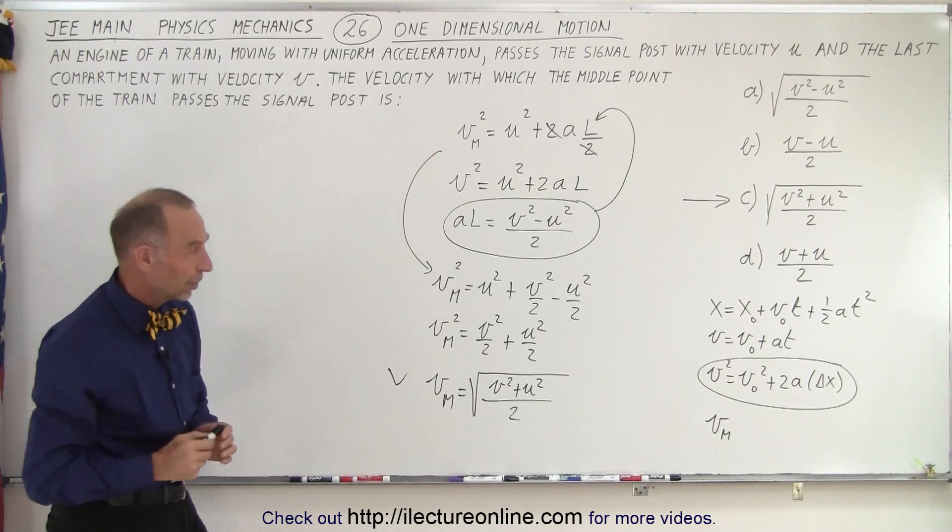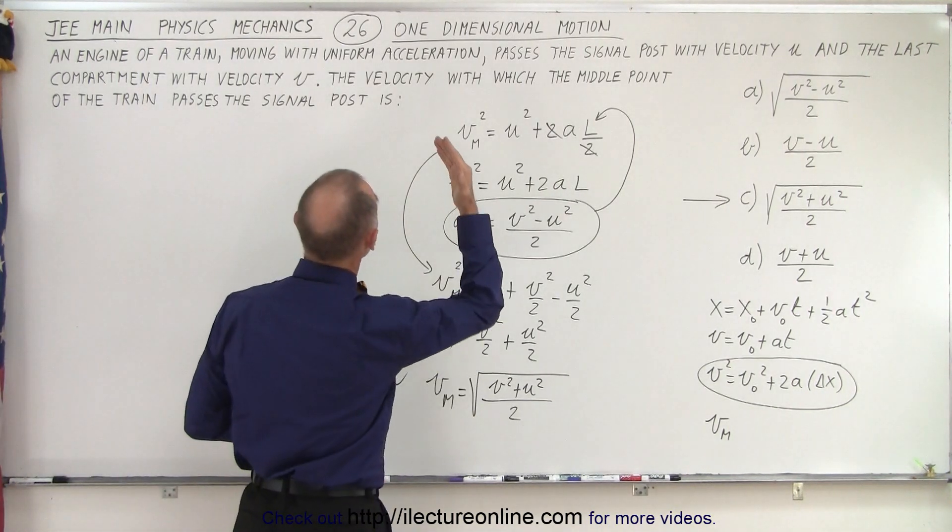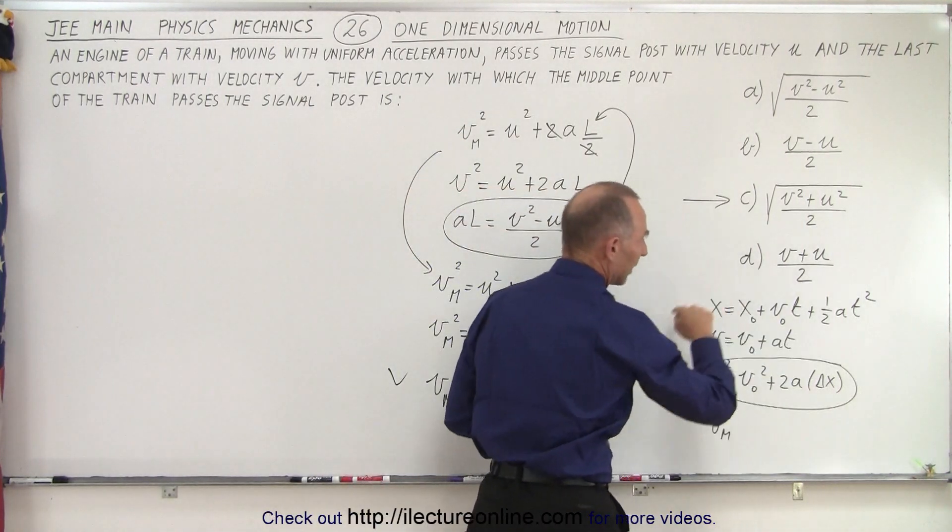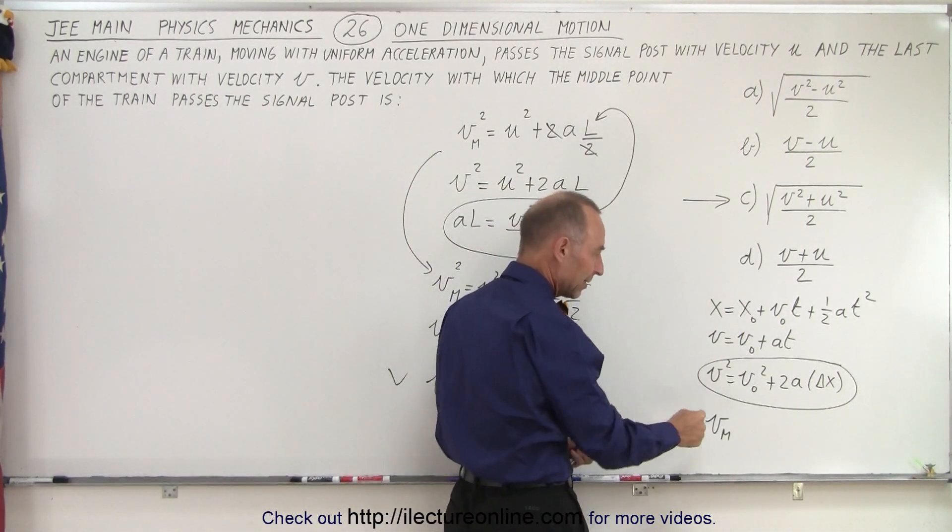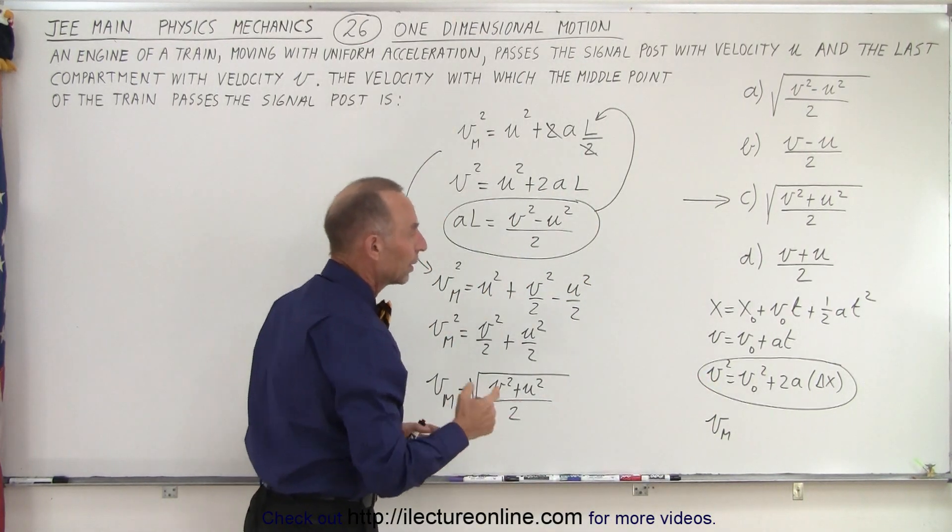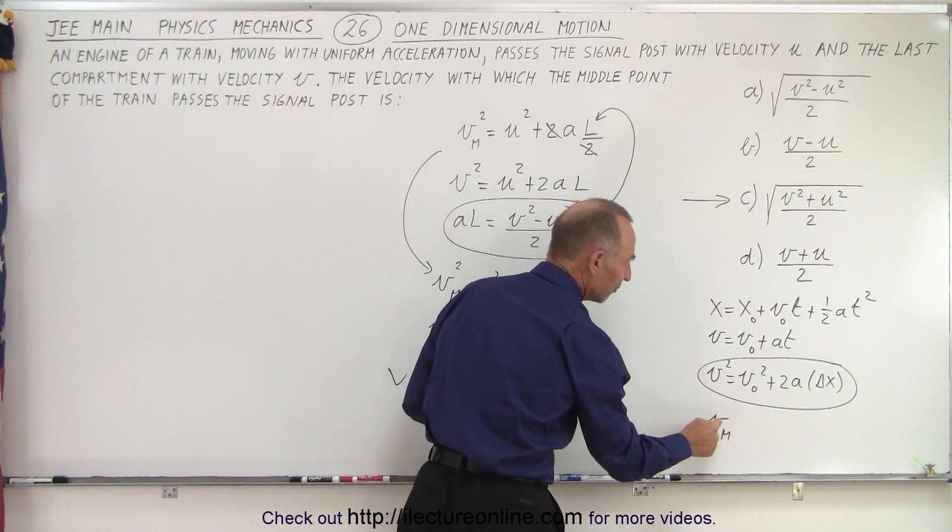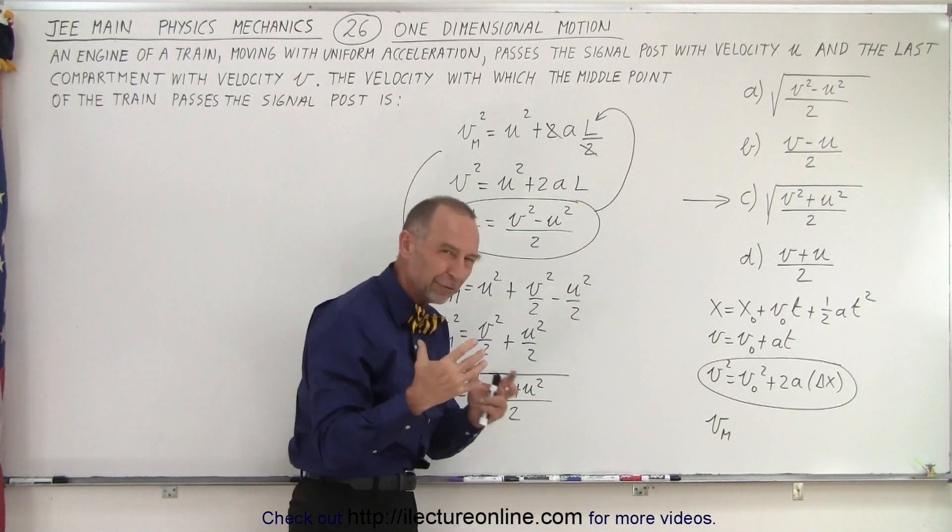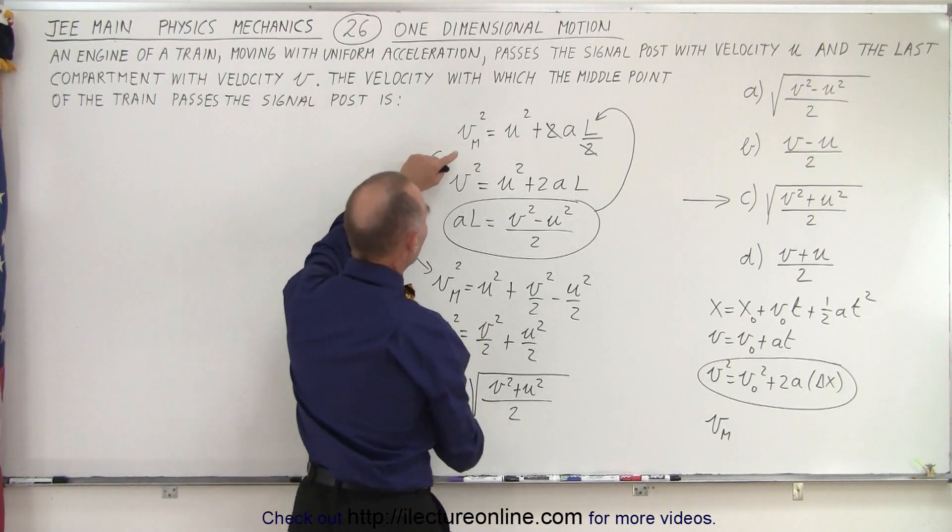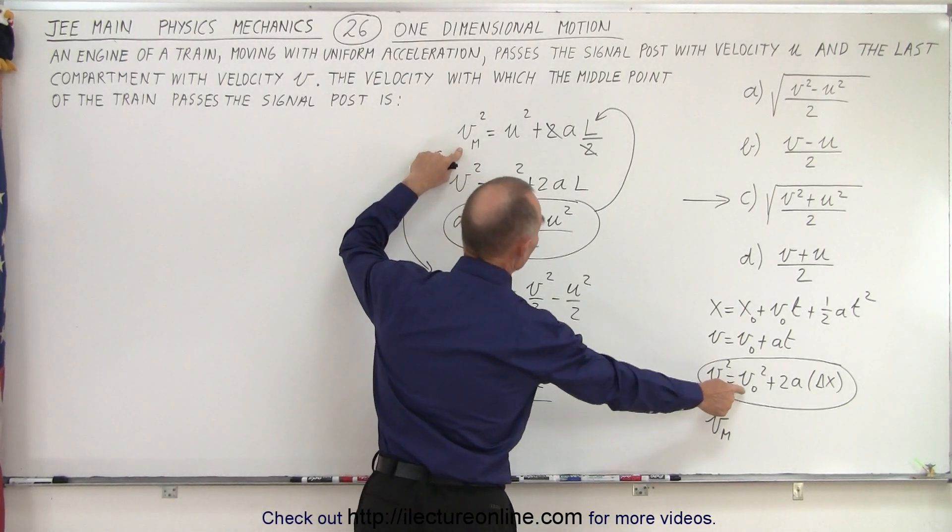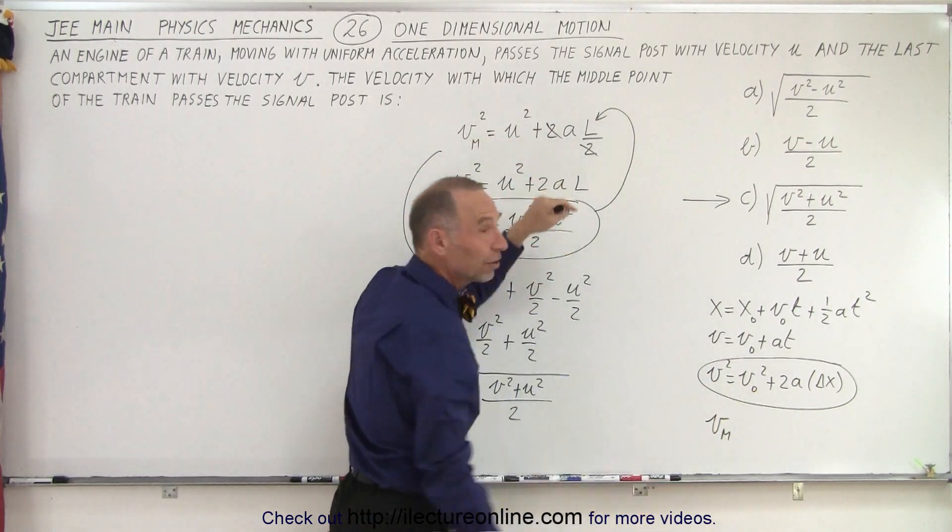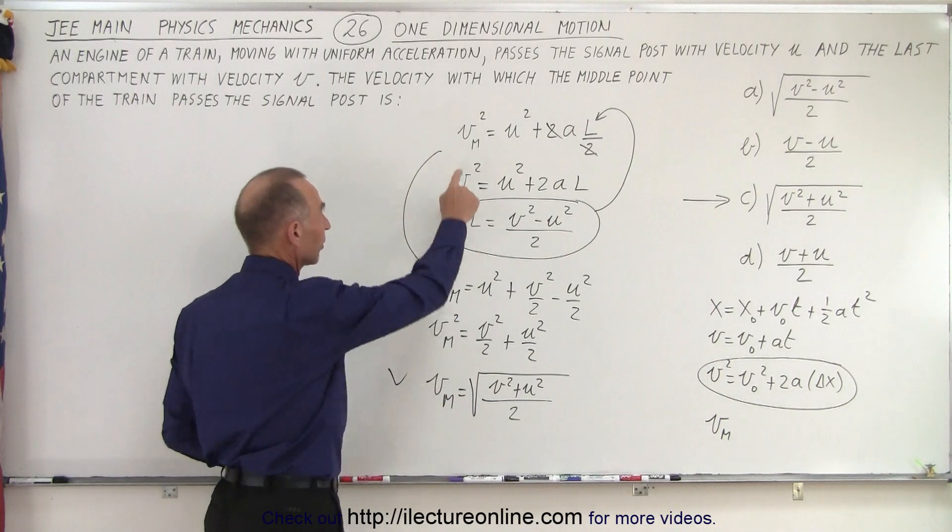So again, the principle here is that we're dealing with one-dimensional motion that involves the three-equation kinematics. Since we don't know anything about the time, we're going to go for the third equation. Let's replace v with v of the middle of the train to get our heads around what we're trying to solve. So that means that the v of the middle of the train squared equals the initial velocity which is u squared plus 2a times the half length of the train because we want to know the velocity at the middle.